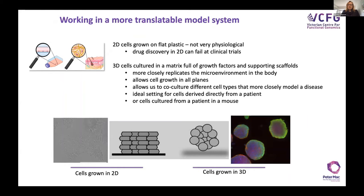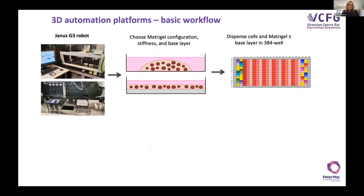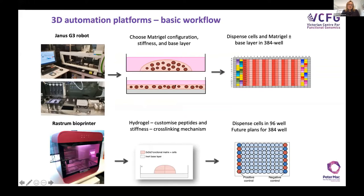Shifting to 3D — as Cameron showed us some lovely pictures of 3D before — the tides have turned and most people recognize that drug discovery in 2D will fail at clinical trials. We're doing this two ways: first, using the Janus robot to embed cells in an automated fashion in the 384-well plate using Matrigel — as a dome layer or a sandwich layer. We also have the Rastrum bioprinter from Inventia Life Sciences, which uses a hydrogel.